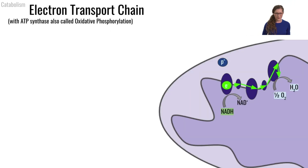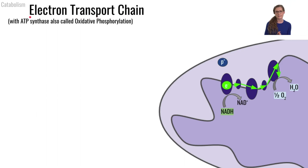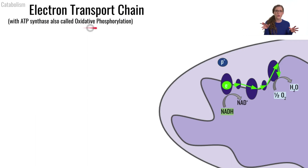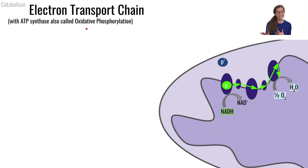When we partner the electron transport chain with ATP synthase, which we'll talk about in our next slide, together those are called oxidative phosphorylation. You may have seen that word before in previous classes or in your textbook. Right now, let's focus on the electron transport chain.